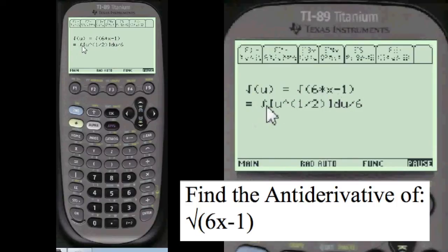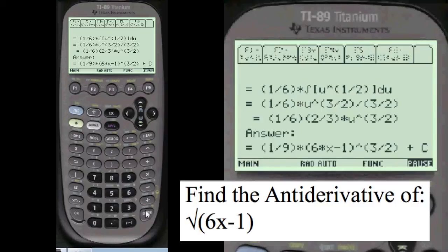So that equals the integral of u to the 1 half because when you take a square root, if this was a cube root it would be 1 third. If this was the fifth root, it would be 1 fifth here. But this is the square root, so it's 1 half. And then you have to add the du divided by 6, which we formulated before. That's one of the big tricks in u-substitution that took me 10 years to figure out.